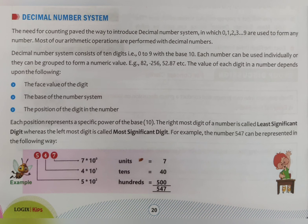The total number of digits used in decimal is 10 — digits 0 through 9 are used to form any number. Most arithmetic operations like addition, subtraction, multiplication, division, and many other operations are performed with decimal numbers using digits from 0 to 9.